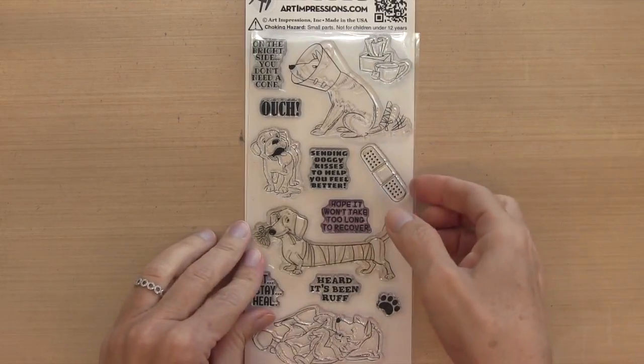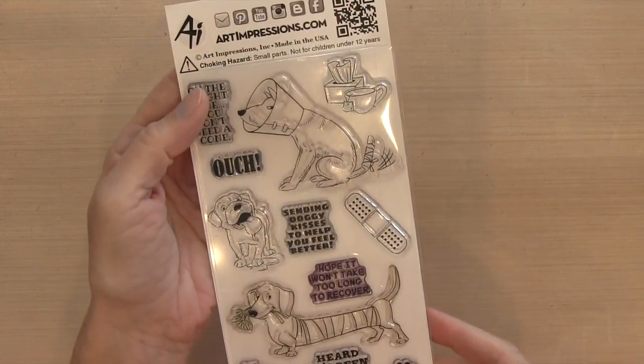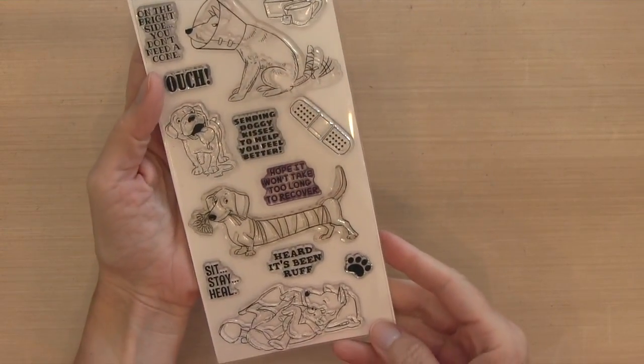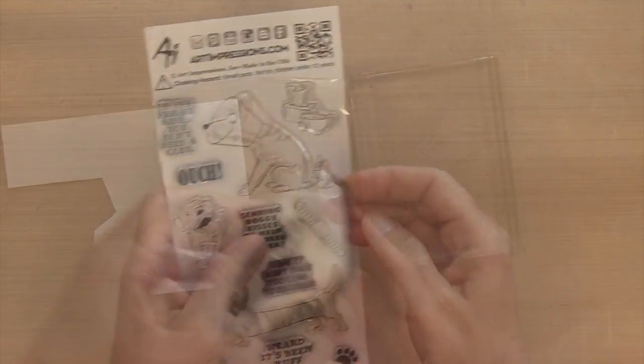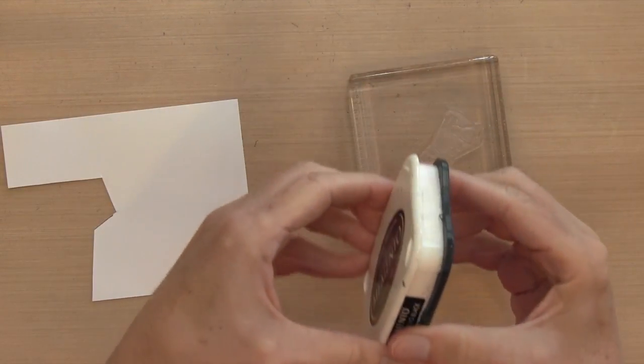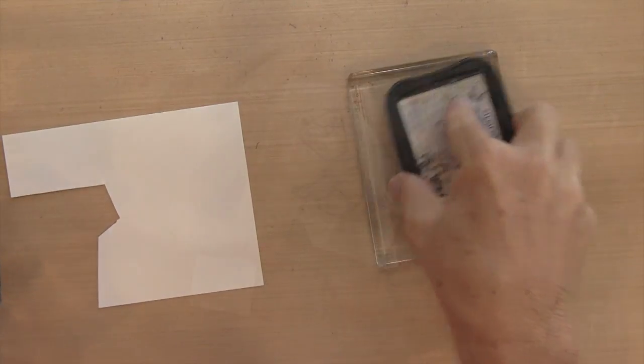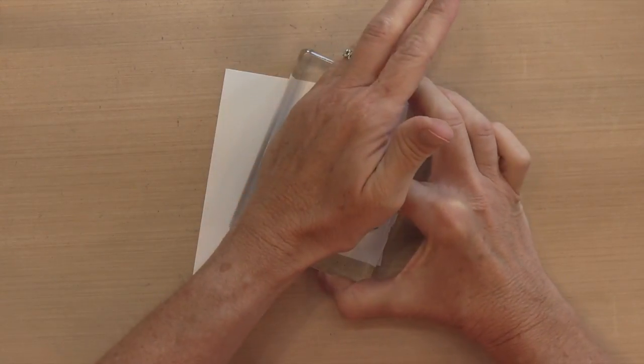So here is the stamp set that I used. I've used it before for a pullout card with a bandaged dog there in the middle. So here I'm using the dog with the cone. I'm going to stamp him with some Memento Tuxedo Black ink on Neenah Solar White cardstock.